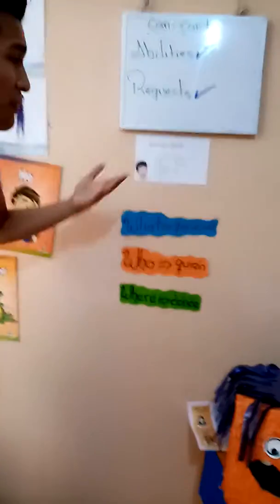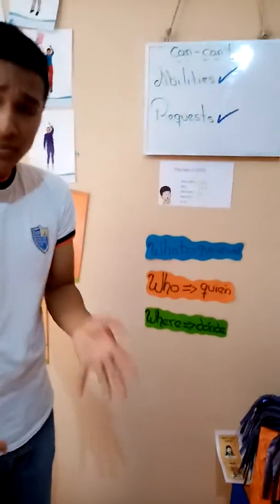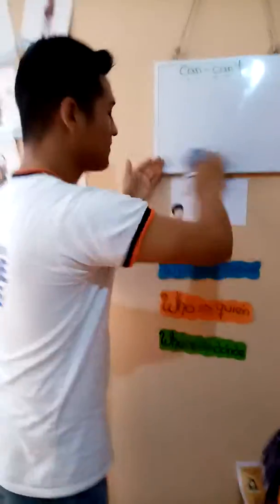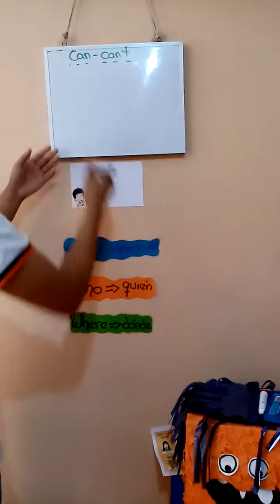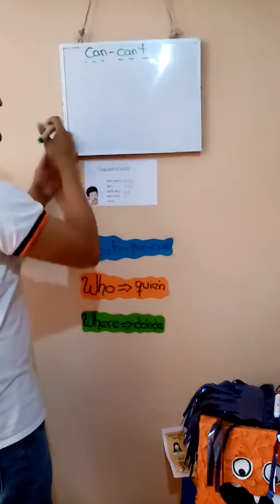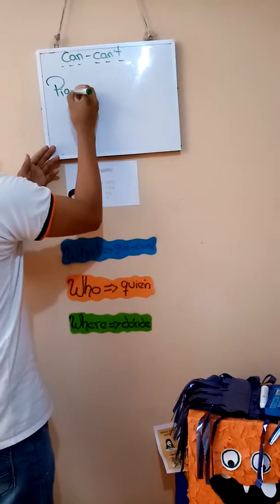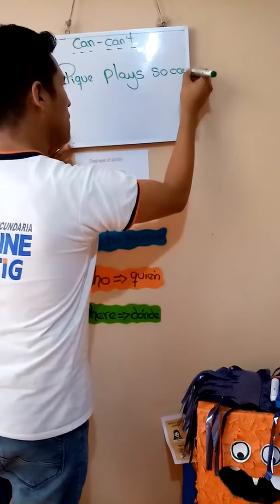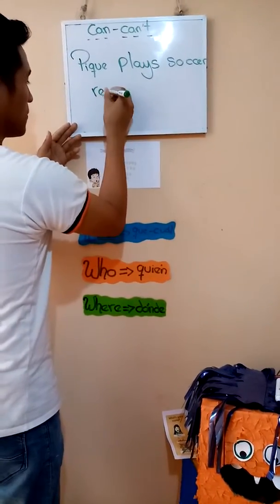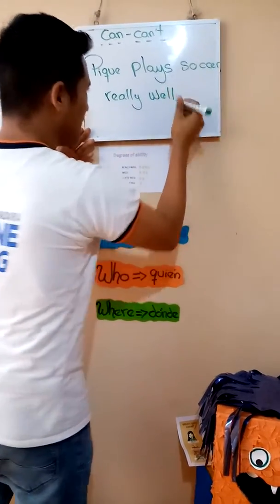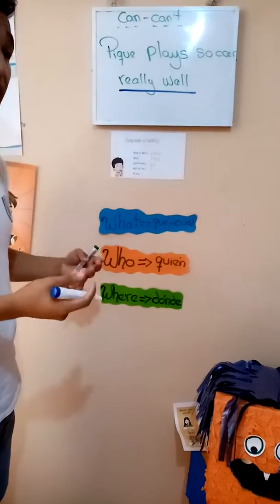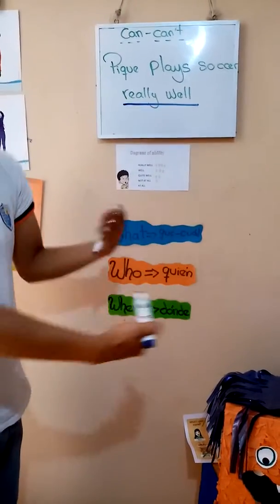We use these quantifiers — these degrees of ability — to say how well you do these abilities. For example, Piqué, the soccer player — Piqué can play soccer really well. Remember, we use these degrees of ability at the end of your sentence to say how well this person does the ability, the action.